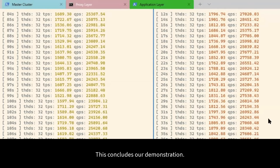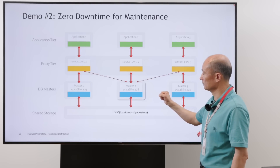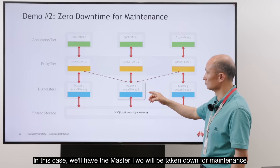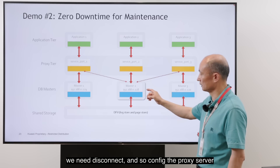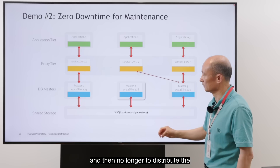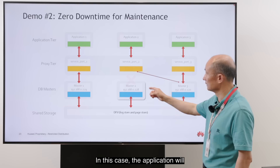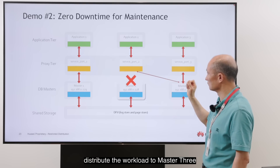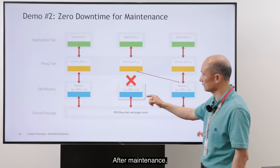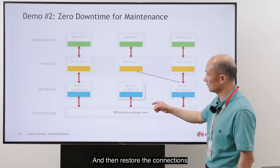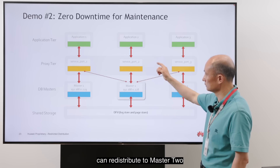This concludes our first demonstration. The second demo is about high availability — zero downtime for maintenance. In this case, we will take Master 2 down for maintenance. Before taking Master 2 down, we disconnect it and reconfigure the proxy server so it no longer distributes requests to Master 2. The application will then distribute the workload to Master 3, and then we'll take Master 2 down. After maintenance, we bring Master 2 back and reinstate the connections so that all requests can be redistributed to Master 2.